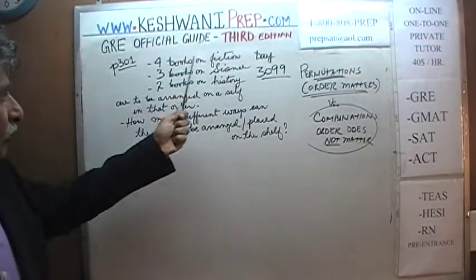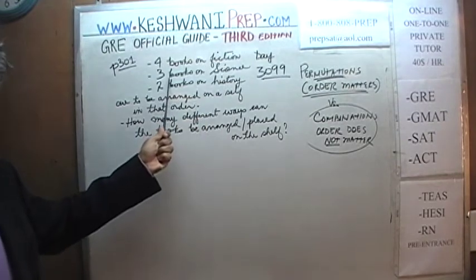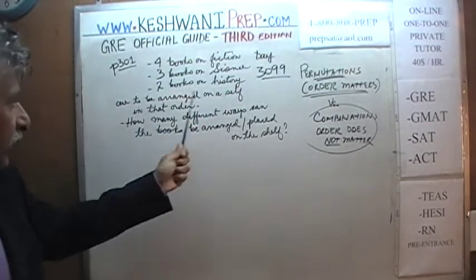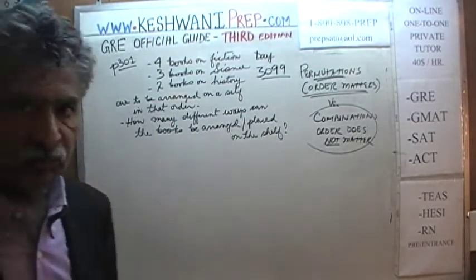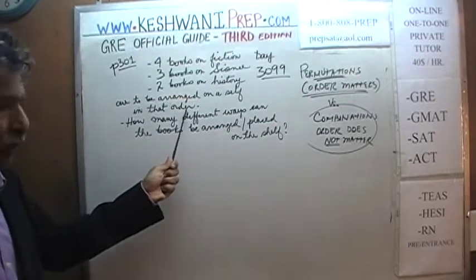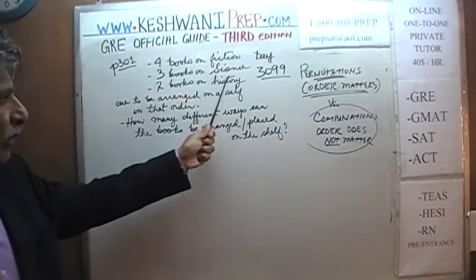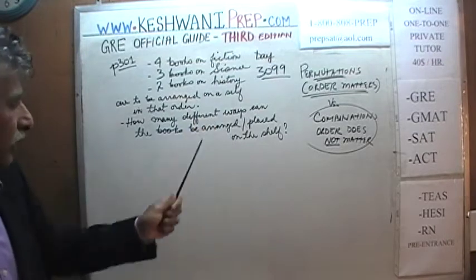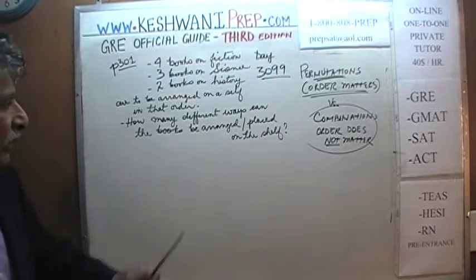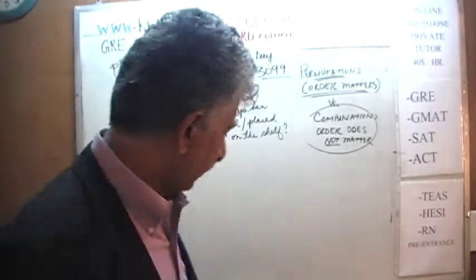We are told that we have four books on fiction, three books on the subject of science, and two books on the subject of history, and we want to arrange these books on a shelf in that order — all the fiction books together, then all the science books, then all the history books. The question is: how many different ways can the books be arranged on the shelf?